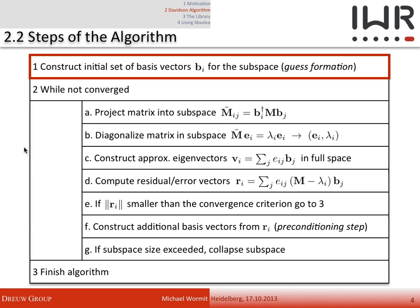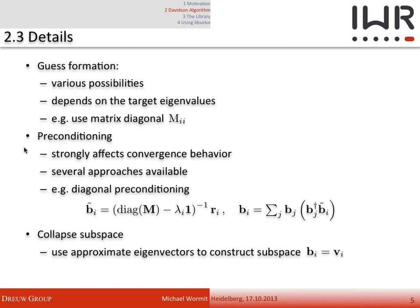Once converged or the specified number of iterations is exceeded, you finish the algorithm and collect your results. For the guess formation there are different possibilities. Usually one takes the largest or smallest entries of the matrix diagonal and uses the standard basis vectors — vectors with a single nonzero entry at index i — as first guess vectors. But there are other possibilities: for example, if you have done a diagonalization before on a smaller system, you could use those eigenvectors as initial guess vectors.